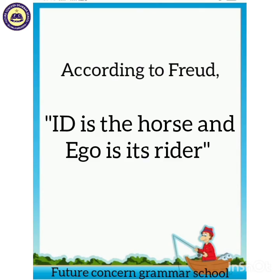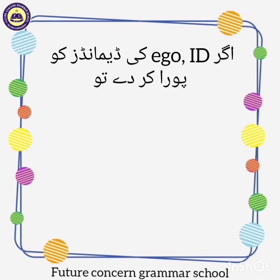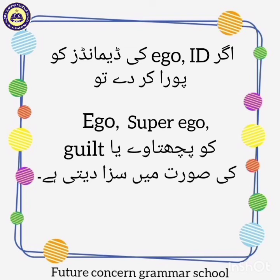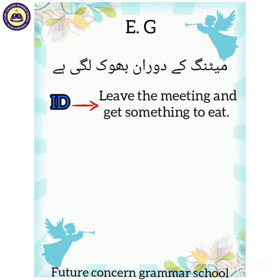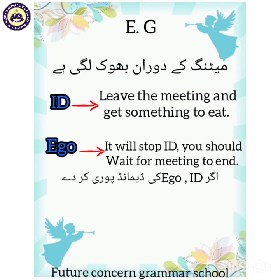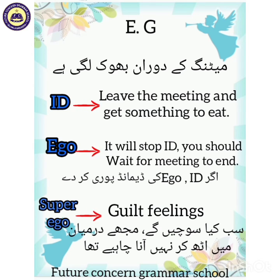According to Freud, id is the horse and ego is the rider. Agar ego id ki demands ko foran poora kar de toh superego ego ko guilt ki feelings ke zariye punish karti hai. For example, in the above example, id keh rahi hai that you should leave the meeting and get something to eat first. Aur agar ego id ki demand poori karne ke liye ready ho jaye aur aap meeting chod kar khaane ke liye chale jayen, toh is situation mein superego act karegi. Aapke mind mein thodi der baad yeh thoughts aaenge keh sab mere baare mein kya sochenge, mujhe is tarah meeting chod kar nahin aana chahiye tha. These thoughts are the result of the action of superego — superego will cause feelings of guilt.